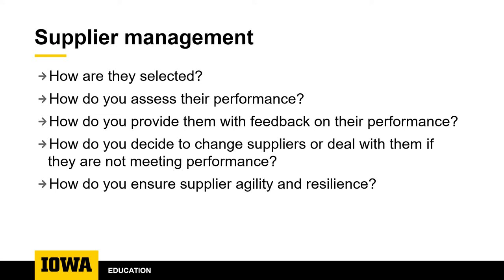And what do you do if they're not meeting your expectations? For example, if your grant submission software crashes on the due date of every major grant submission, what actions would you take to get them to address this issue or allow your unit to move on to another supplier? Two additional topics the pandemic really highlighted were supplier agility and resilience — what happens if you have to make a major change in your operations in a short amount of time, or if there's some issue with your supplier's supply chain?